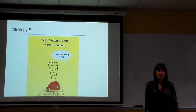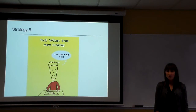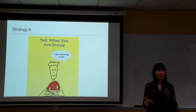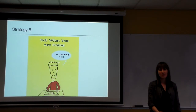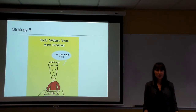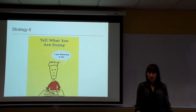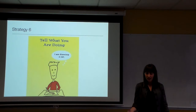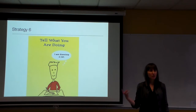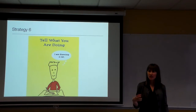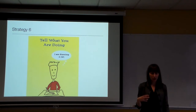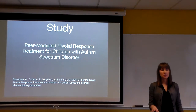The sixth strategy is narrating play. By having the play coach describe what they're doing — 'I am driving the car around the maze,' 'the doll is swinging on the swings,' 'I am taking off the baby's hat' — you're also getting the child to orient their attention. You're drawing them into what's happening, modeling language, and giving them words to describe play they may not already have.